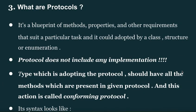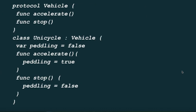What are protocols? A protocol is a blueprint of methods, properties, and other requirements that suit a particular task. It can be adopted by a class, structure, or enumeration. A protocol does not include any implementation. The type which adopts the protocol must implement all the methods present in the protocol — this is called conforming to a protocol. Its syntax looks like: `protocol Vehicle { func accelerate(); func stop() }`.